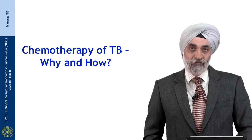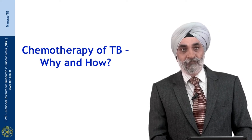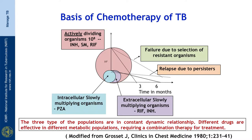Quickly taking you through the why and how of chemotherapy of TB. It has been hypothesized that in a given case of tuberculosis, there are three very important populations: a rapidly dividing or actively dividing group of organisms, an intracellular slowly multiplying group, and an extracellular slowly multiplying persistent group which has just a spurt of growth in between.